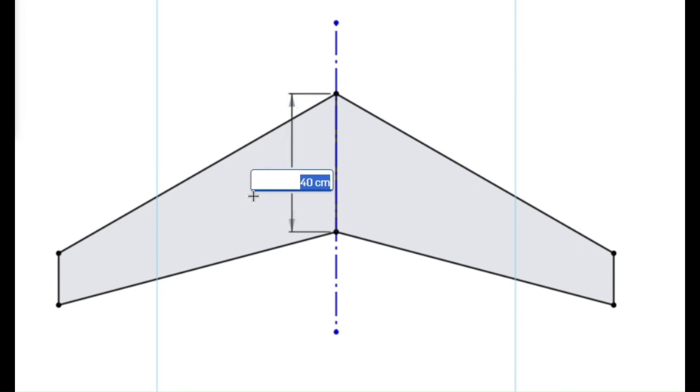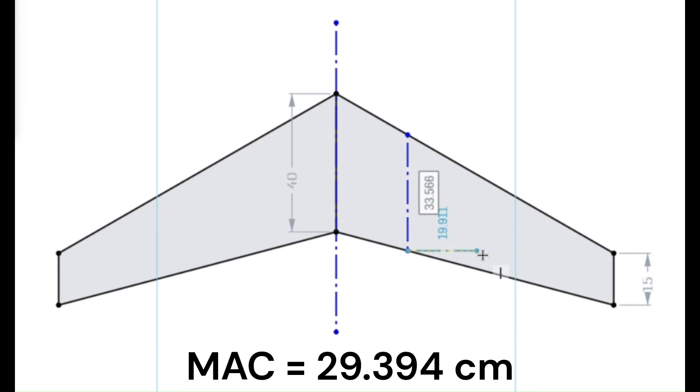Suppose the root cord is 40 cm and the tip cord is 15 cm. So, the taper ratio lambda is 0.375. Using the formula, we get a MAC of 29.394 cm.